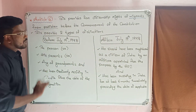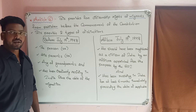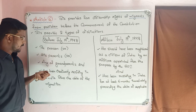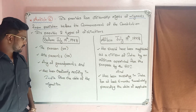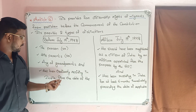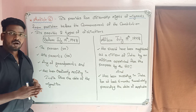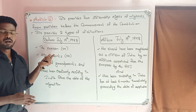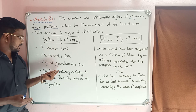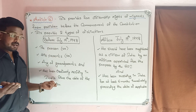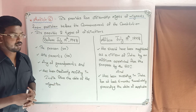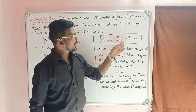Before July 1948: the person, or his parents, or any of his grandparents, must have been ordinarily resident in India since the date of migration. That is, the father, mother, or grandparents must have been residents in India from the date of migration.